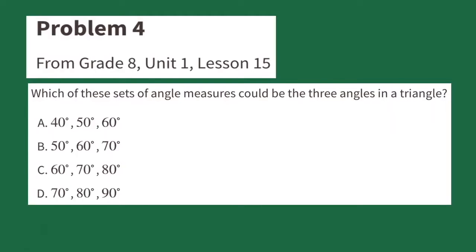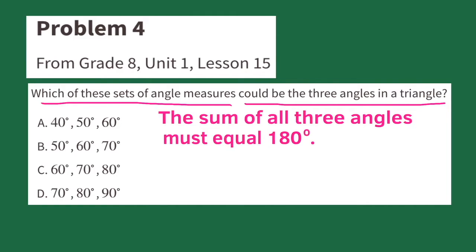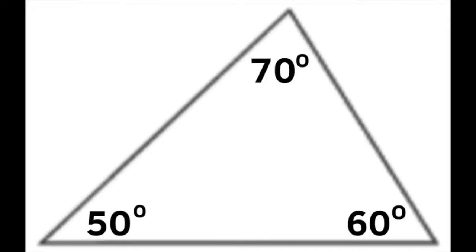Number 4, from 8th grade Unit 1, Lesson 15: Which of these sets of angle measures could be the three angles in a triangle? Remember that the sum of all three angles in a triangle must equal 180 degrees. B is the only option that would work: 50 degrees plus 60 degrees plus 70 degrees equals 180 degrees. Those three angle measures could be the three angle measures of a triangle.